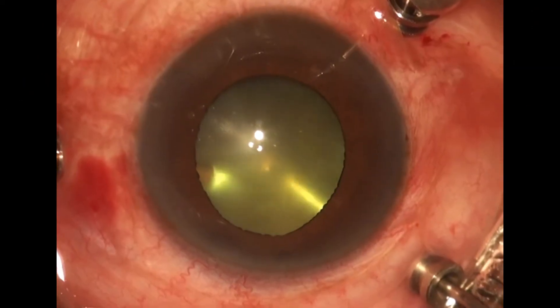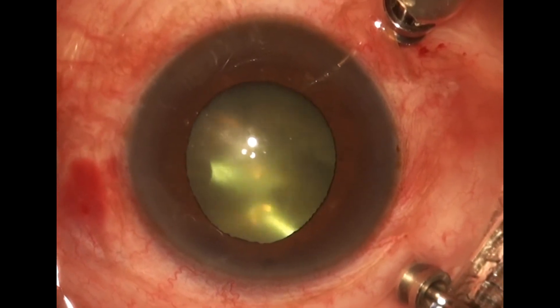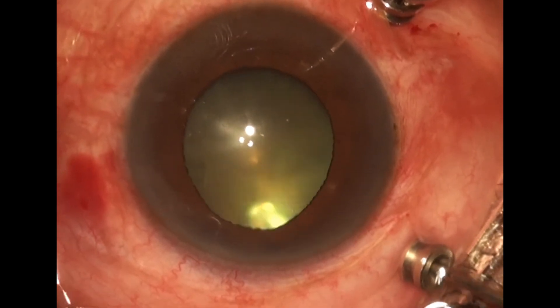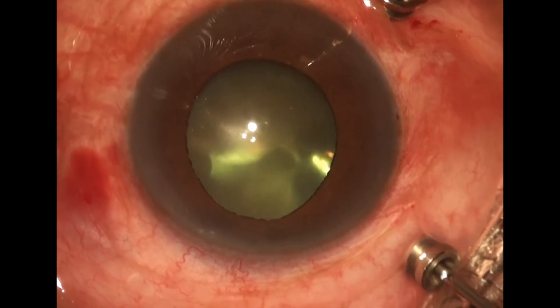Hi guys, welcome back. Today we deal with a case of retinal vasculitis. We have started using a 23 gauge MIVS system. We are clearing the blood in the anterior vitreous and then we proceed to clear the vitreous haemorrhage.